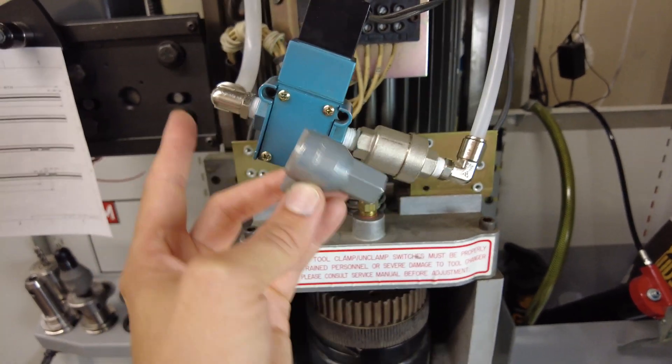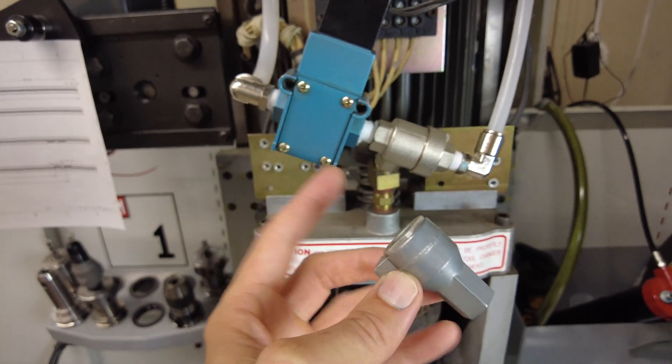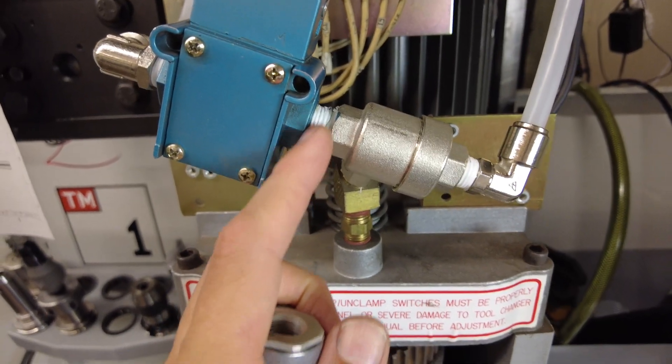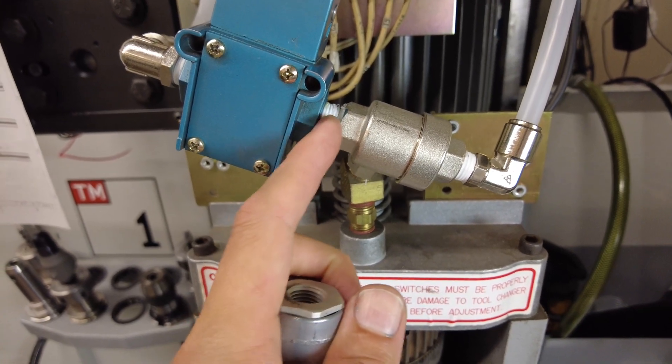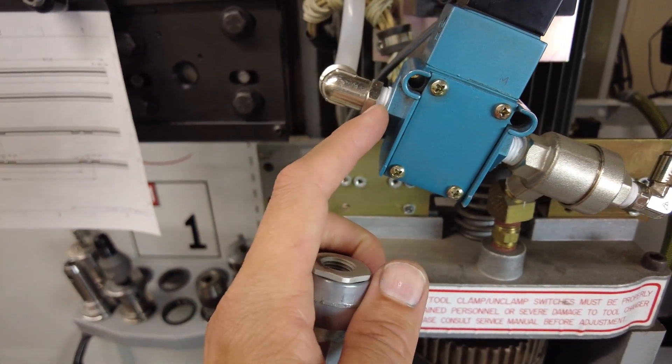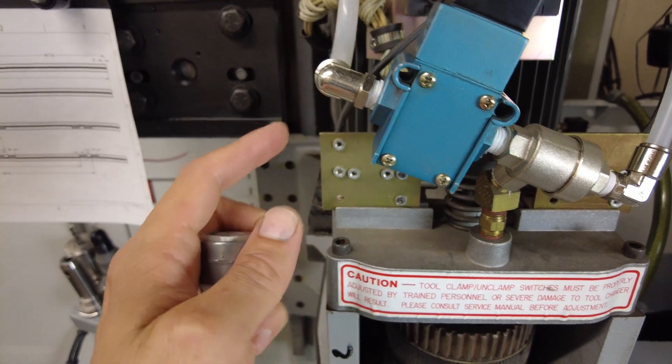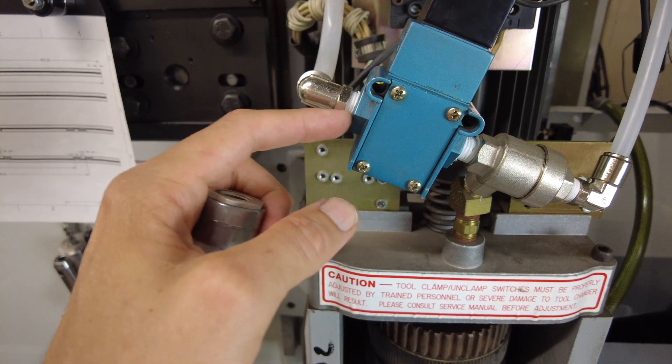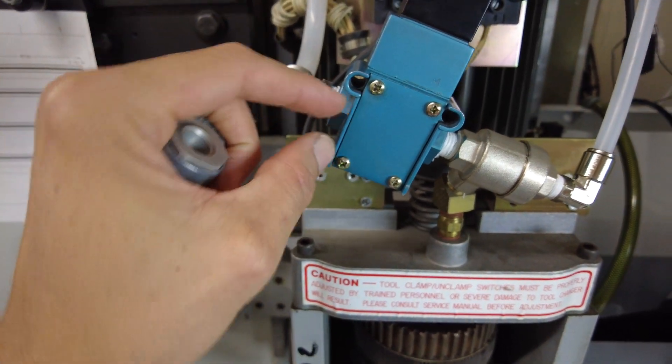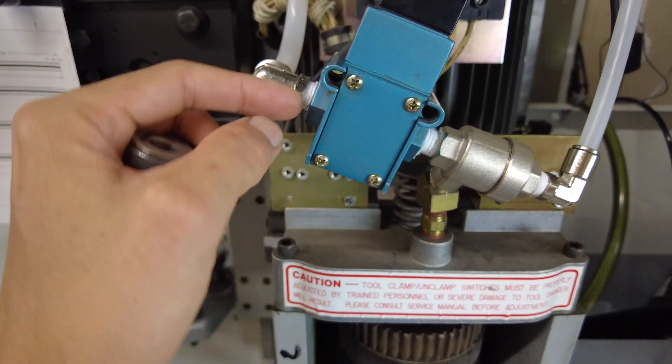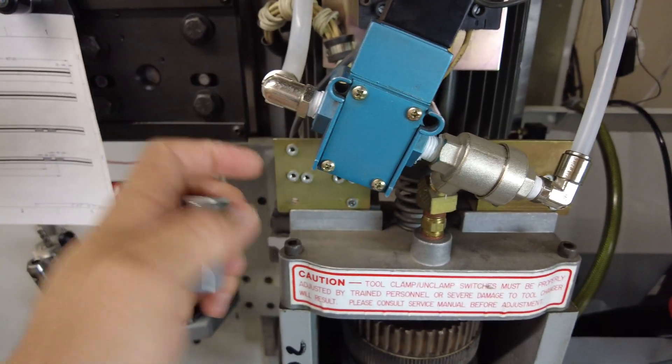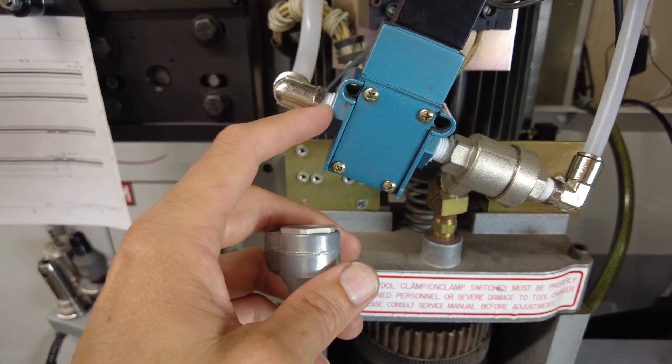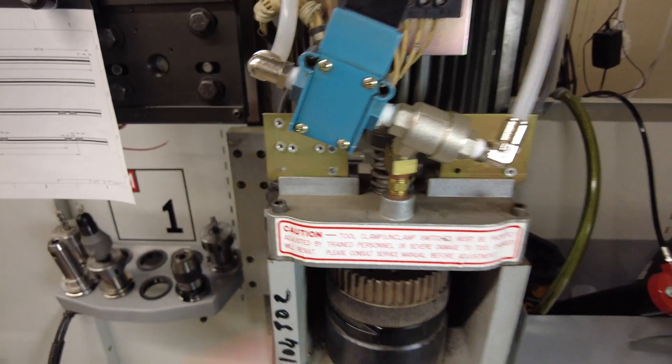One solution would be to get a threaded coupler that would be shorter and wouldn't take up so much space. These NPT fittings are kind of difficult to shorten. The only way you'd shorten this would be to thread the valve deeper so this fitting could go in deeper, but then you need to be careful because you might lose the sealing properties of the taper.